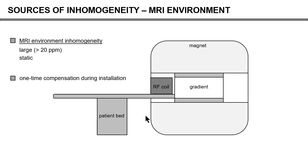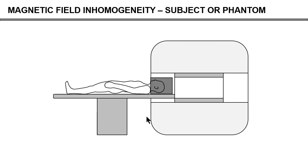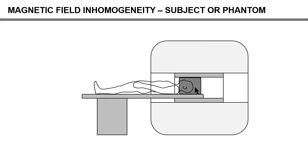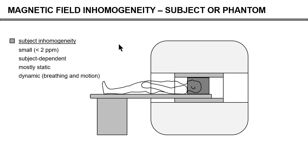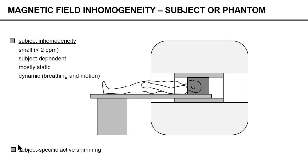The problem that we as researchers deal with are mostly related to the sample that we put in — either a phantom or a human or an animal. Every human is slightly different, and so the inhomogeneity that the sample introduces will vary from human to human or from phantom to phantom. So the inhomogeneity that your sample introduces is relatively small, but it is subject-dependent, and therefore you need to deal with it every time you put a new subject in. It is mostly static, and there are some dynamic components related to breathing and motion. This kind of inhomogeneity requires subject-specific active shimming, and that will be the bulk of my talk today.